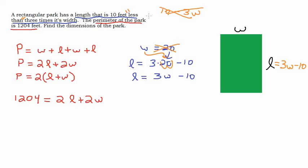We have these two facts. We've got that the length is three times whatever the width is and then 10 less than that. And we know that the perimeter adds up to be 1204. So basically we can take this 3W minus 10 and put that where our length is.